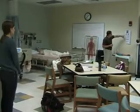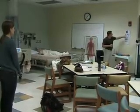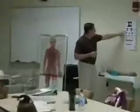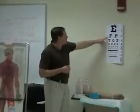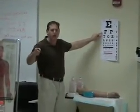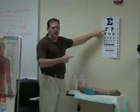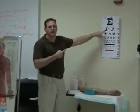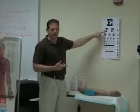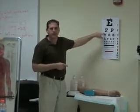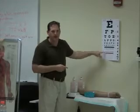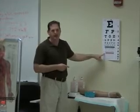For instance, if she could only read this line right here — F-P — you look at it, it's 20-100. What that means is she read at 20 feet what other people could read at 100 feet. That would mean her eyes are worse than other people. So the bigger the bottom number, the worse off your patient is. The smaller the number, the better off they are.